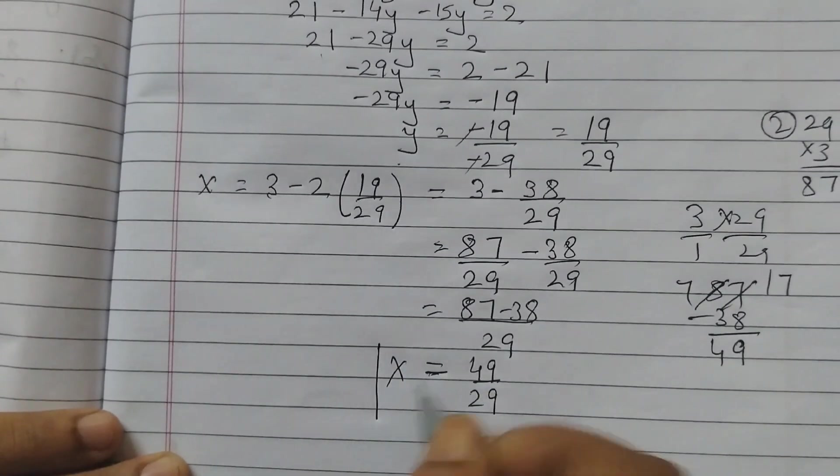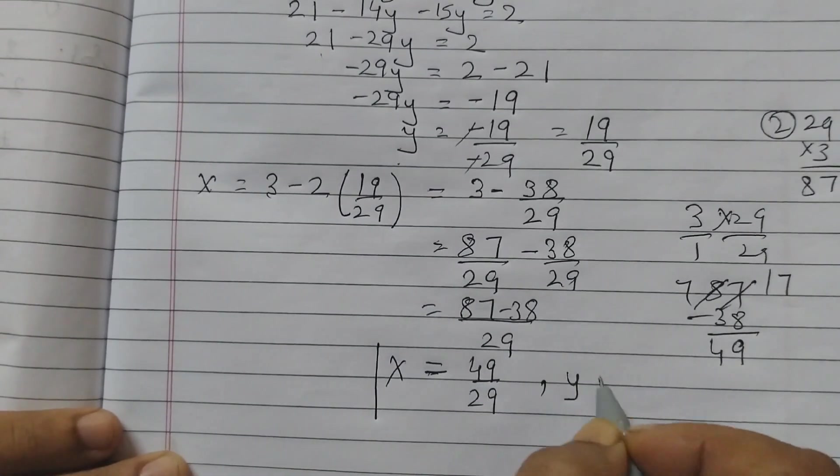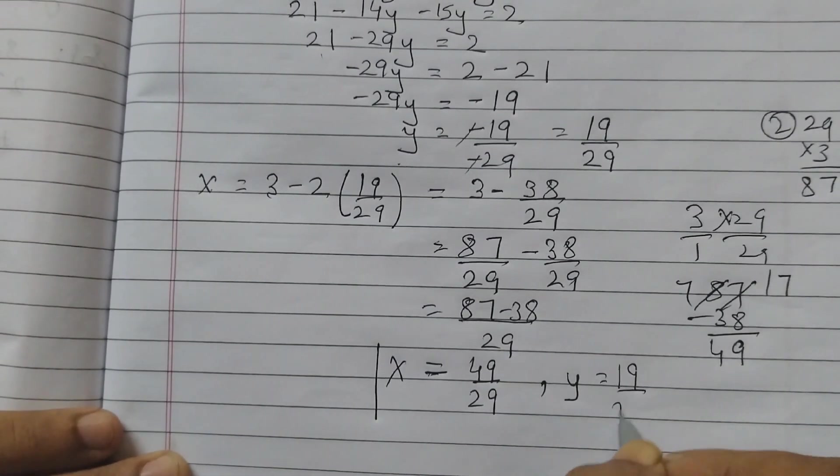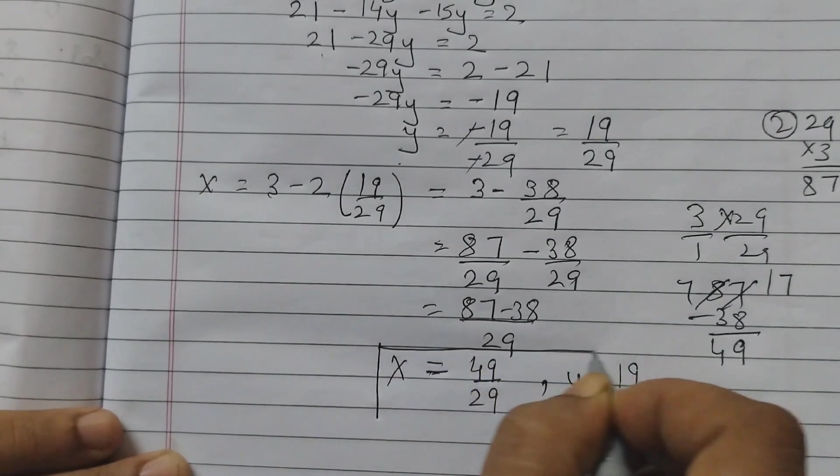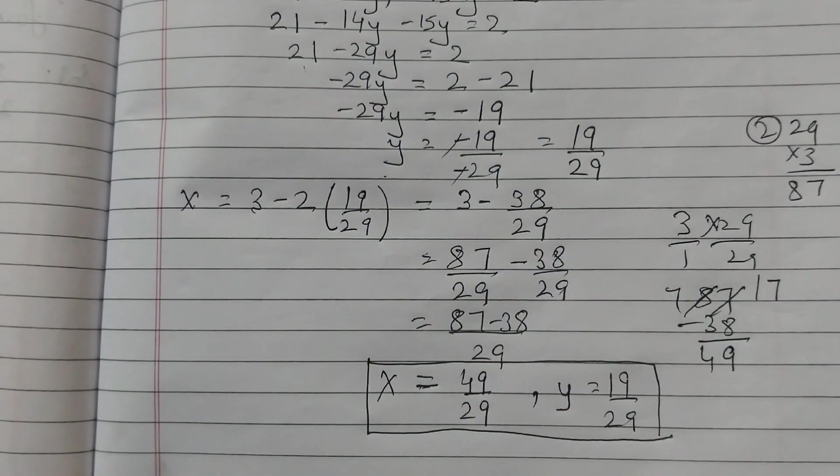x is equal to 49 by 29 and y is equal to 19 by 29, and you can verify both equations 1 and 2.